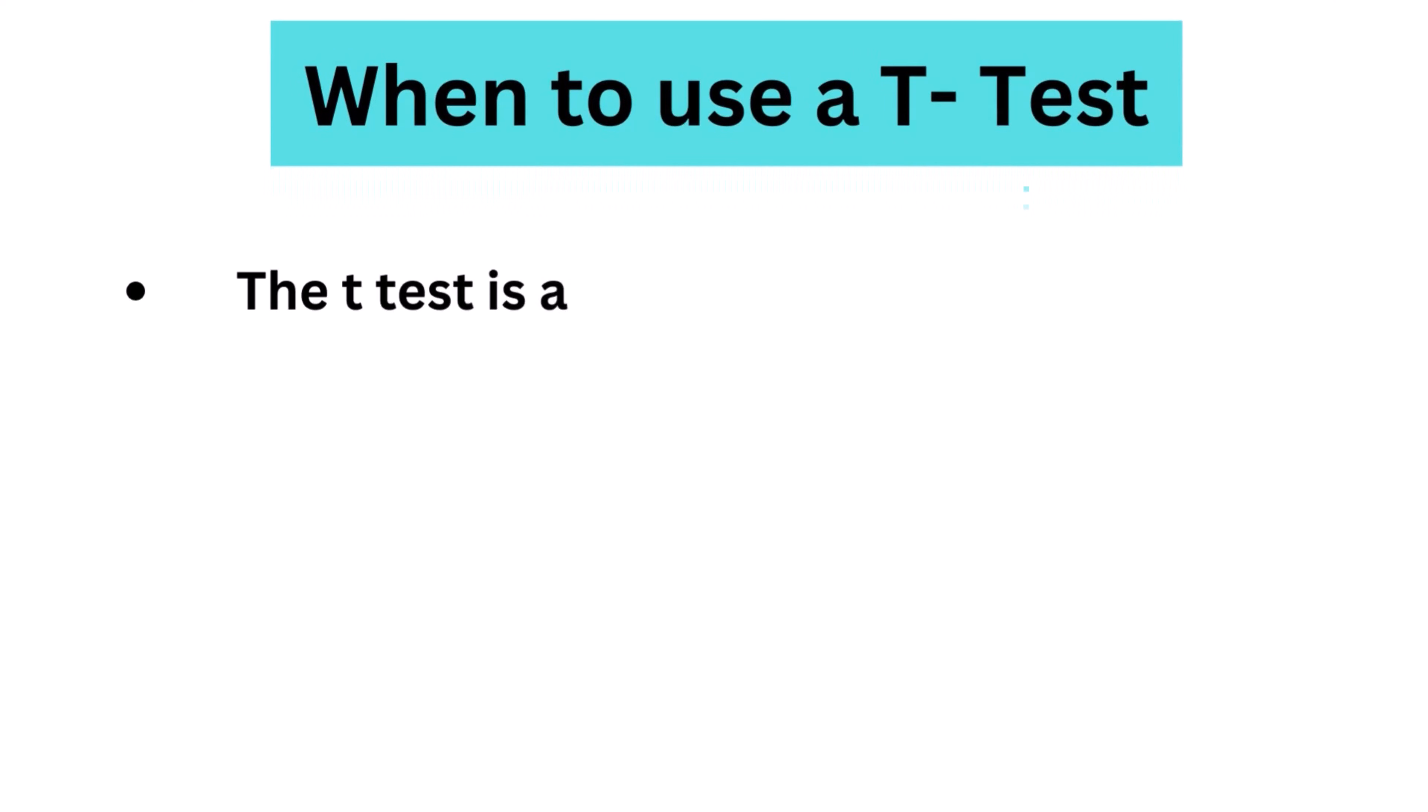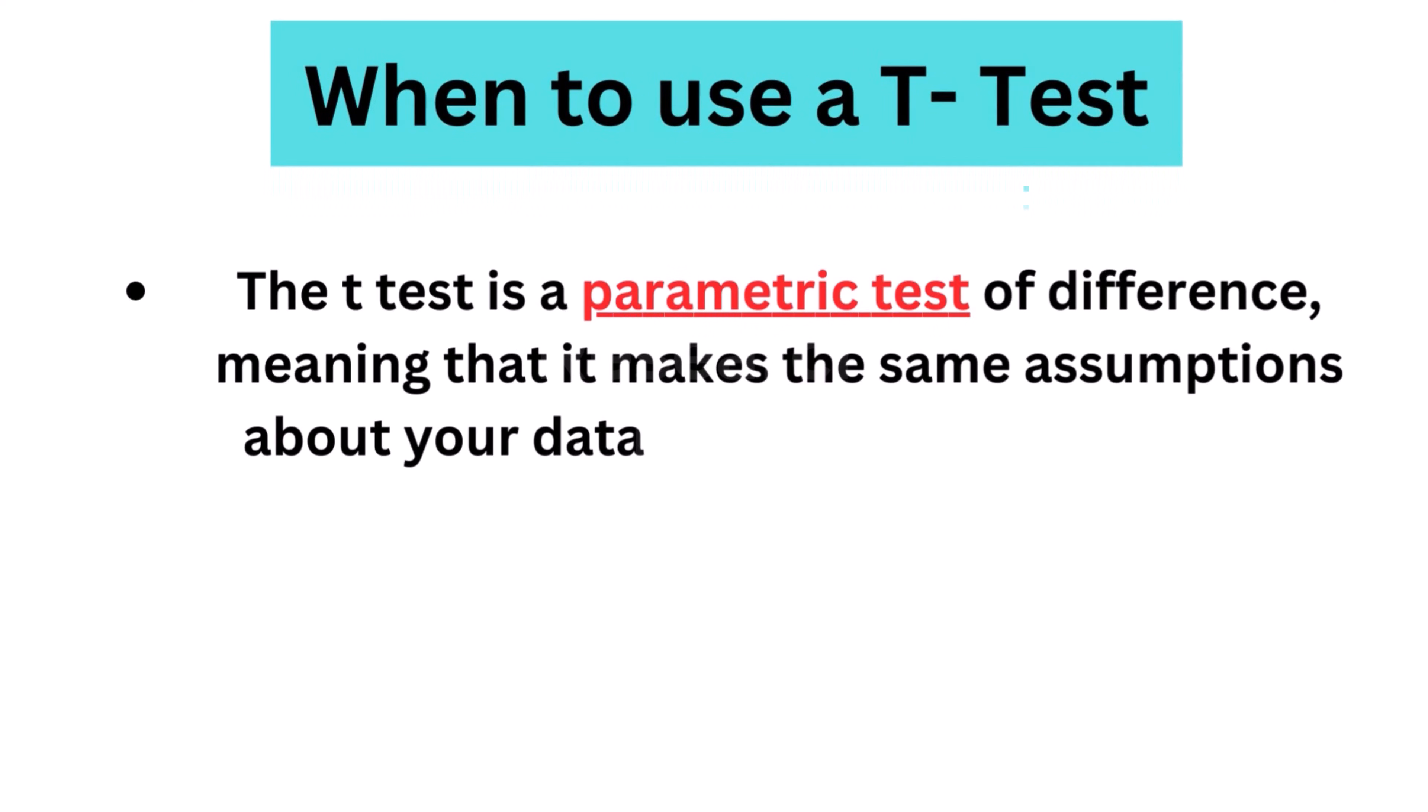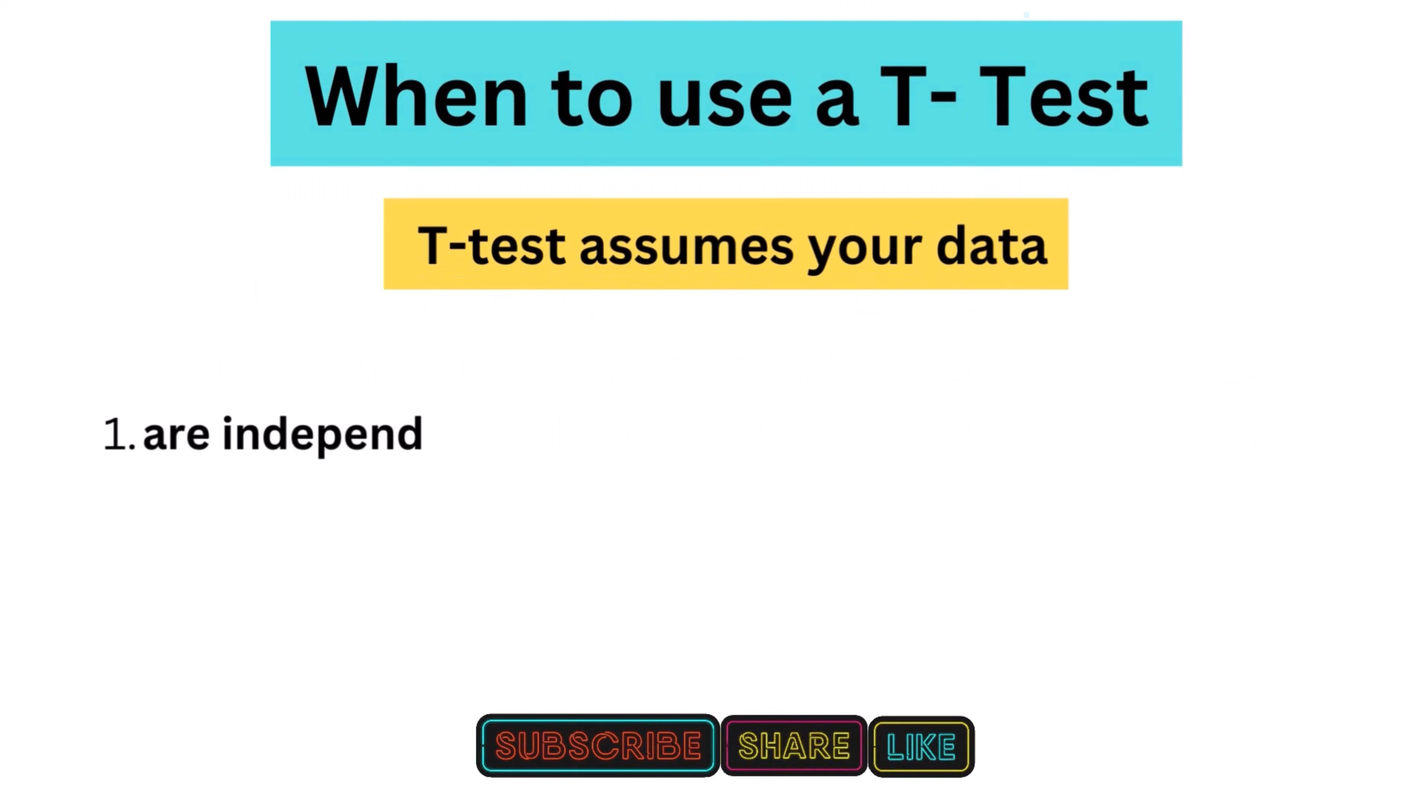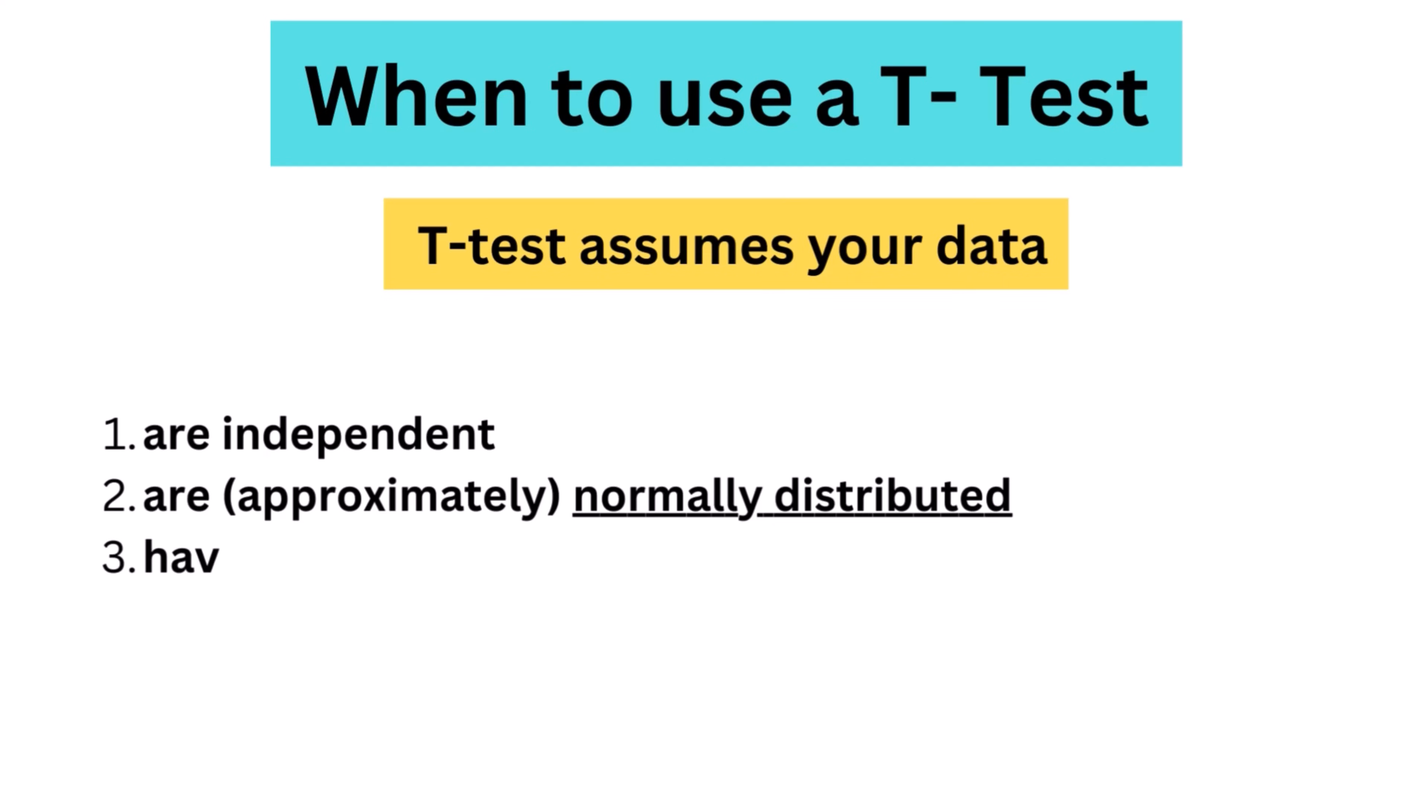The t-test is a parametric test of difference, meaning that it makes the same assumptions about your data as other parametric tests. The t-test assumes your data: 1. are independent, 2. are approximately normally distributed, 3. have a similar amount of variance within each group being compared, also known as homogeneity of variance.